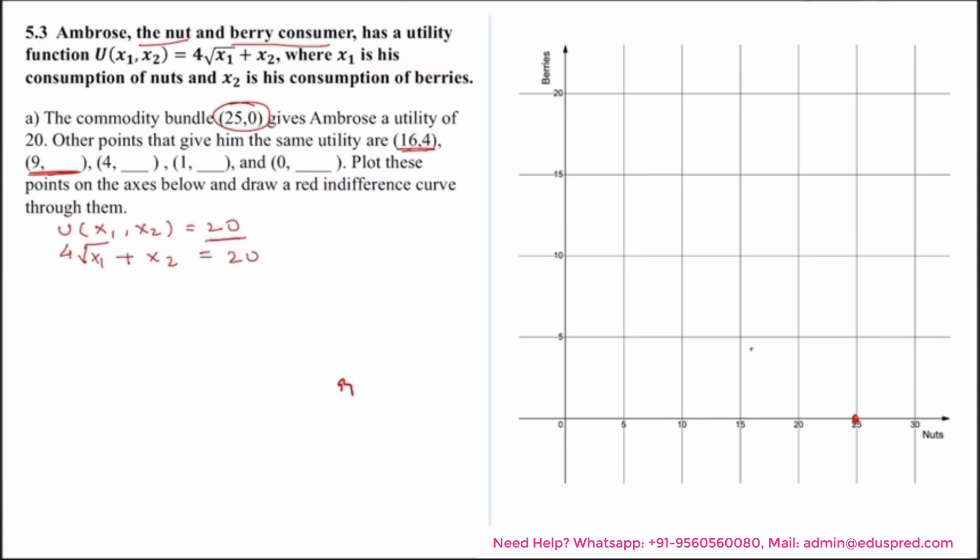That means he is consuming 9 units of nuts and dash units of berries. That means Ambrose's consumption bundle would be of the form (x1, x2), where x1 is the units of nuts and x2 is the units of berries. Here in our case x1 is 9, and this is something we have to find. So substituting the value of x1 here into this equation, I would be able to get the value of x2 because that is the only variable left for us.